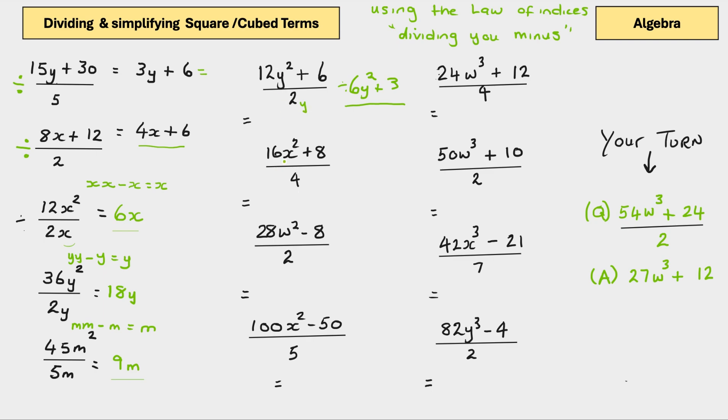Same again. 16x squared plus 8 divided by 4. 4 divided by 16 equals 4. X squared is attached to it. There's no x at the bottom. And 4 divided by 8 equals 2. That's your answer, 4x squared plus 2.